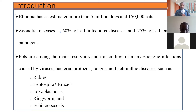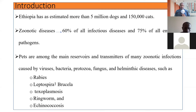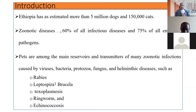As you all know, zoonotic diseases are transmitted from animals to humans. Almost 60 percent of all infectious diseases are zoonotic, and the majority — almost 75 percent — are emerging pathogens. These animals can become transmitters for many zoonotic diseases. Common zoonotic diseases from pets include rabies, leptospira, brucella, toxoplasma, ringworm, and echinococcus.